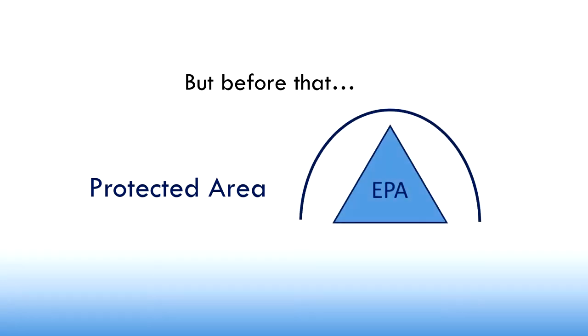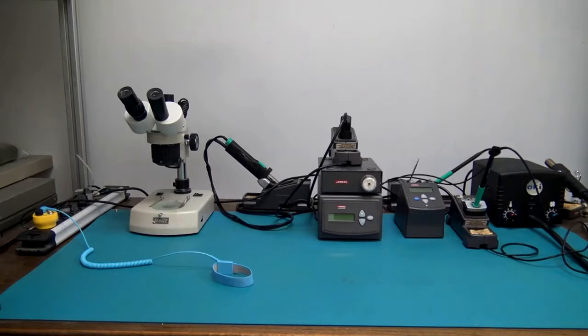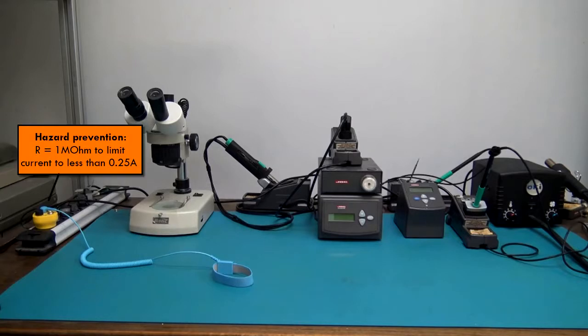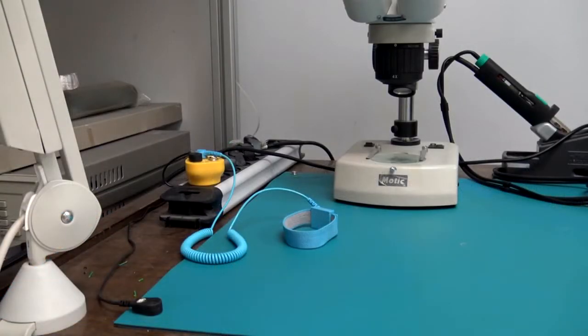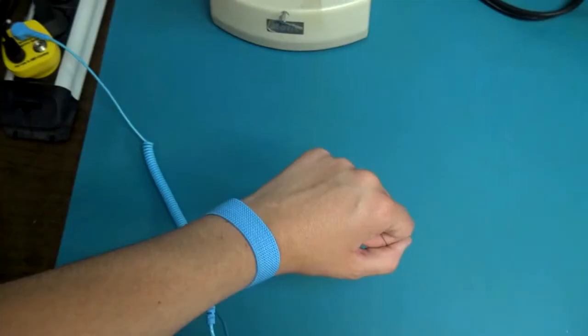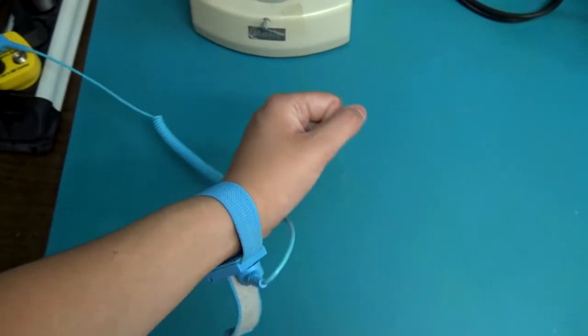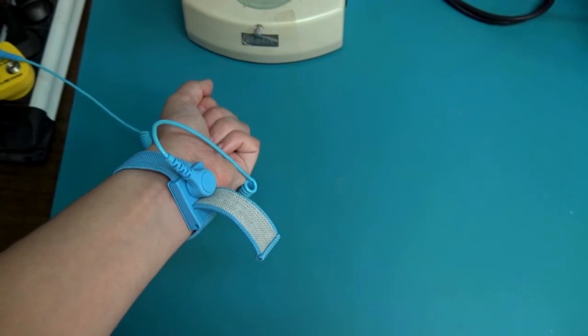Before that, we have to set a protected area — an EPA — where we are going to work with sensitive components. Here we have our EPA, with an anti-static surface and a wrist strap connected to a common ground point, where we connect all the conductors to. We have also removed the isolators from the area. The wrist strap is used to ground personnel, as we can see in this video.